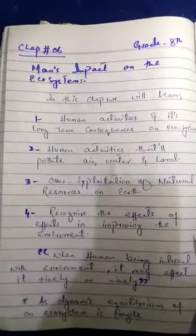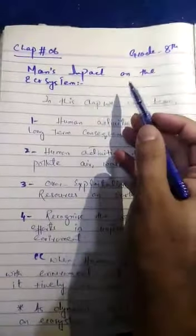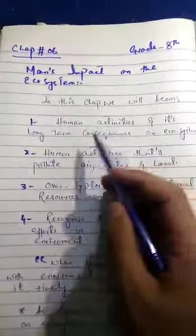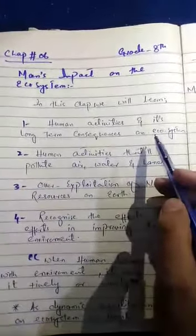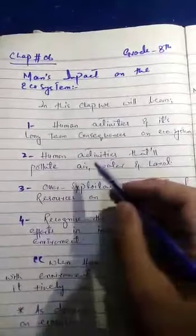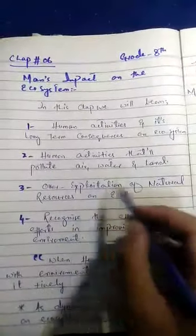Assalamu alaikum dear students, today we are going to discuss a new chapter of your course which is human impact on ecosystem. In this chapter we will learn about human activities and its long-term consequences on ecosystem - may be positive or may be negative. Human activities that will pollute air, water and land, our exploitation of natural resources.